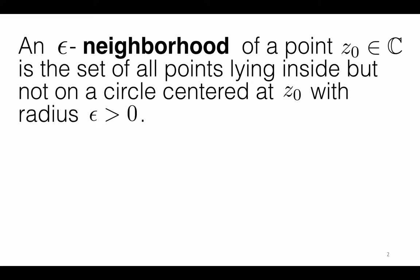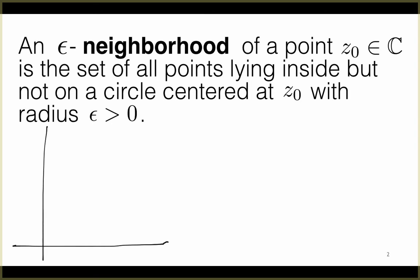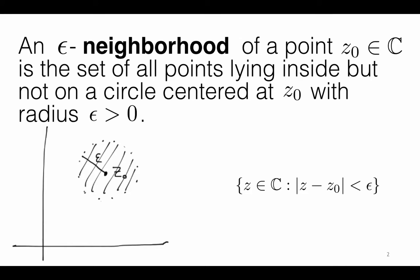Our first definition is for an epsilon neighborhood. An epsilon neighborhood of a point z0 in the complex plane is the set of all points lying inside but not on a circle centered at z0 with radius epsilon greater than zero. Given a point z0, we take a circle centered at z0 with radius epsilon, and this whole region inside the circle is an epsilon neighborhood of z0. Another name for this is an open ball centered at z0 with radius epsilon. In set notation, this is the set of all complex numbers z such that the modulus of z minus z0 is less than epsilon.